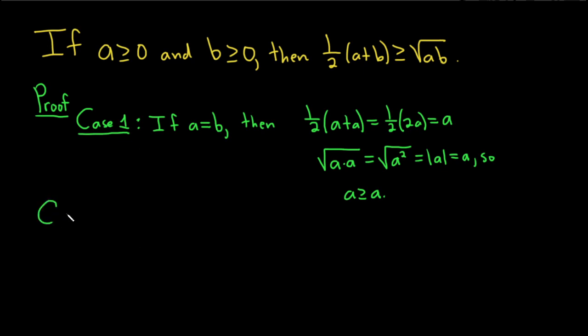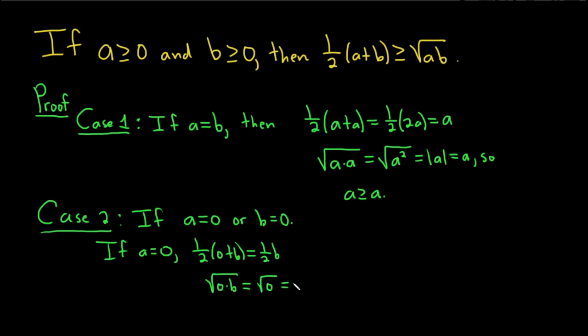Case 2 would be if a is equal to 0 or b is equal to 0. If a is 0, then we have 1/2(0+b), which is 1/2 b. That's the left-hand side. The right-hand side would be the square root of 0 times b, which is 0. Clearly, 1/2 b is greater than or equal to 0, because b is greater than or equal to 0.